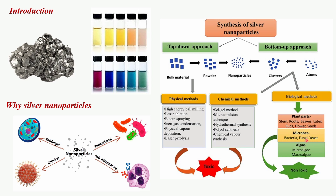Biological methods use biological agents like plant extracts, microorganisms, enzymes, and algae to reduce silver ions and stabilize the nanoparticles. These processes typically result in more uniform and controlled particle sizes and shapes compared to the top-down approach.